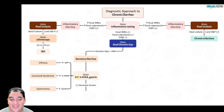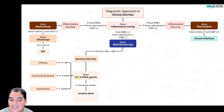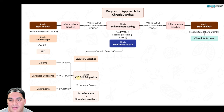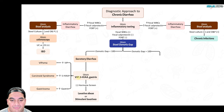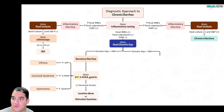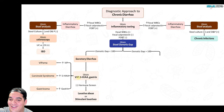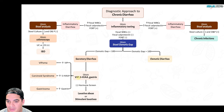If all those hormone levels come back negative, it's probably stimulant laxative abuse — think senna and docusate in a patient with chronic constipation taking them regularly. If the osmotic gap is greater than 100, stool sodium and potassium are normal — indicating osmotic diarrhea.